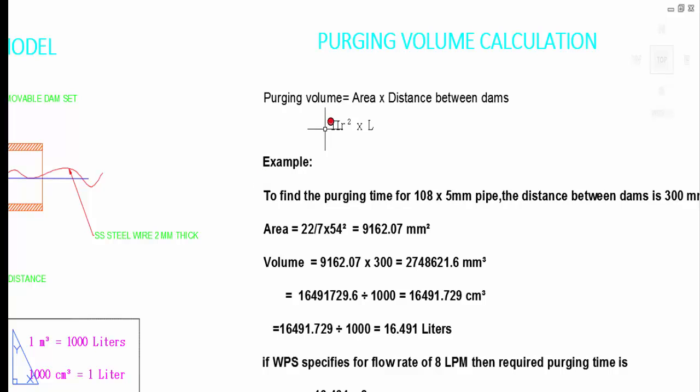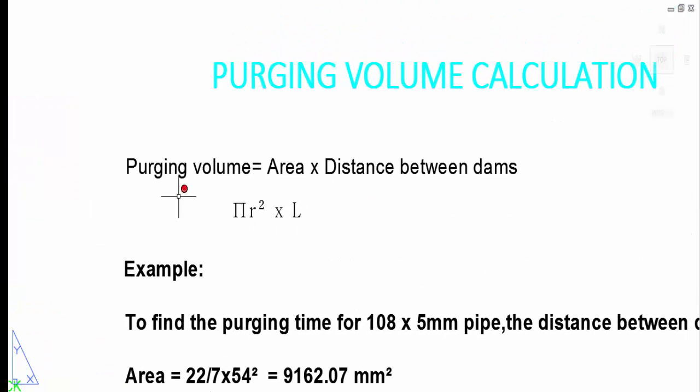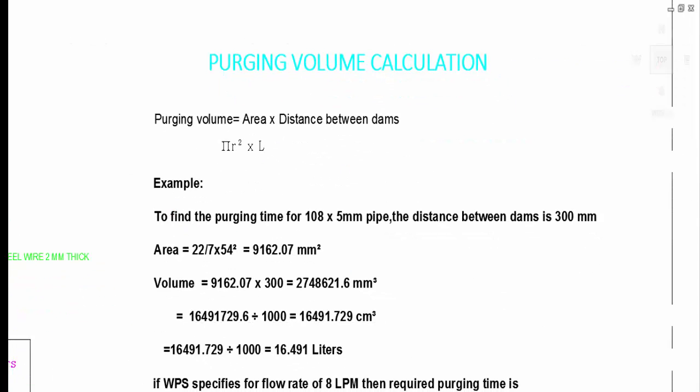Purging volume equals area times distance between the dams. The formula is π r squared times l, where l means distance between the dams.